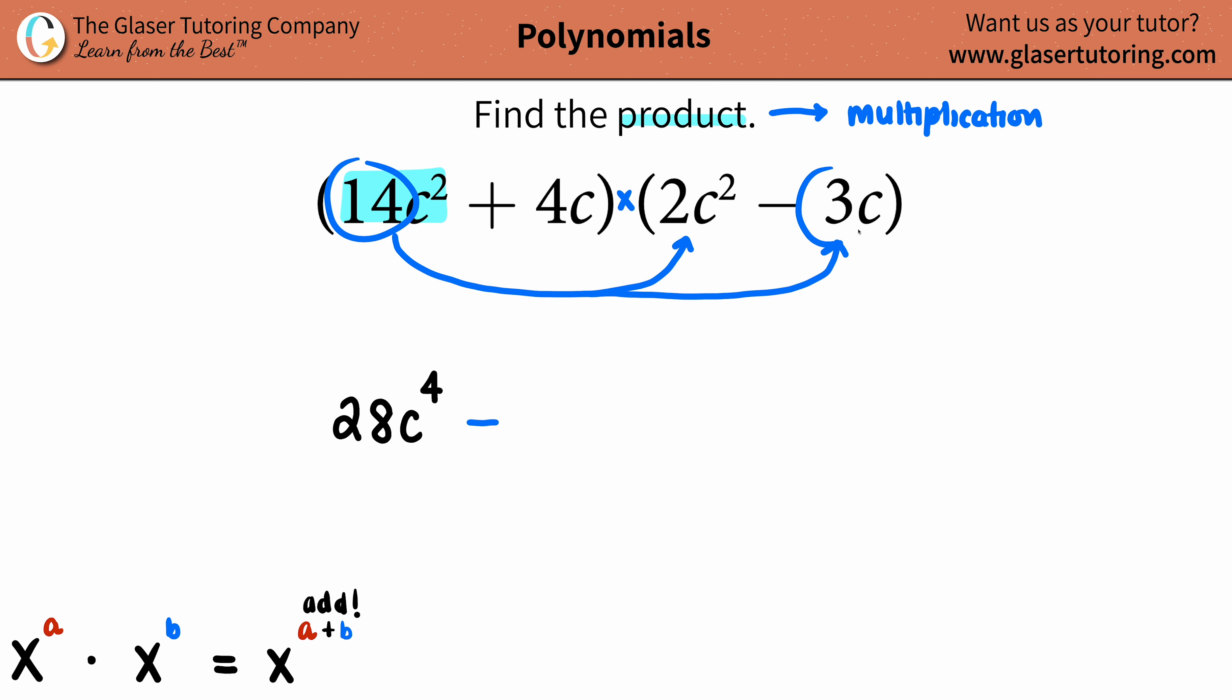14 times a negative 3, well that's going to be a negative, so we'll put a negative here. And then 14 times 3 is what? 4 times 3 is 12, so 42. So negative 42.